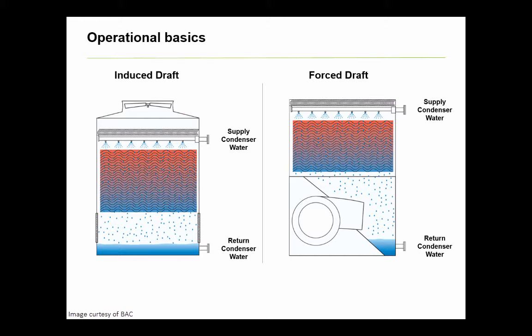These towers simply take a hot supply of condenser water, evaporate a portion of its heat to the atmosphere, and return the remaining cooler condenser water to the facility to be used again to absorb heat. First, hot water is sprayed down over a cooling tower material called fill, which is where the heat transfer takes place. The fill's purpose is effectively to increase the time the water and air cross paths.